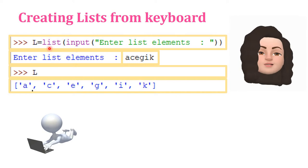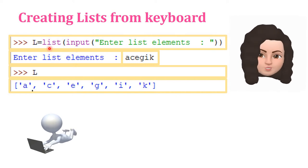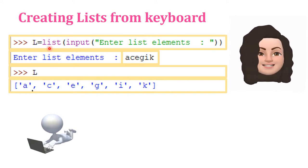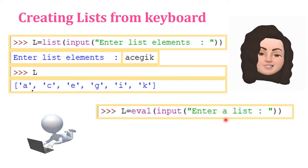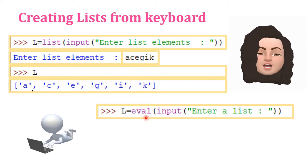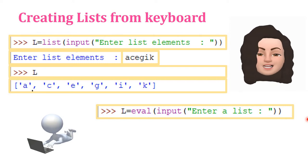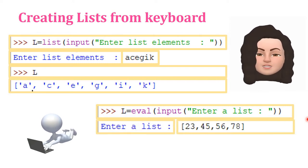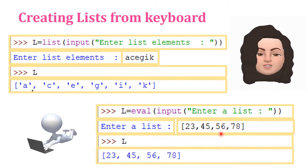If you want to enter the input as a list itself, you have to use the eval function: L = eval(input('Enter a list')). For example, giving the input as [23, 45, 56, 78] will directly store it as a list. Displaying L gives [23, 45, 56, 78]. So using eval, we can directly give a list as input.